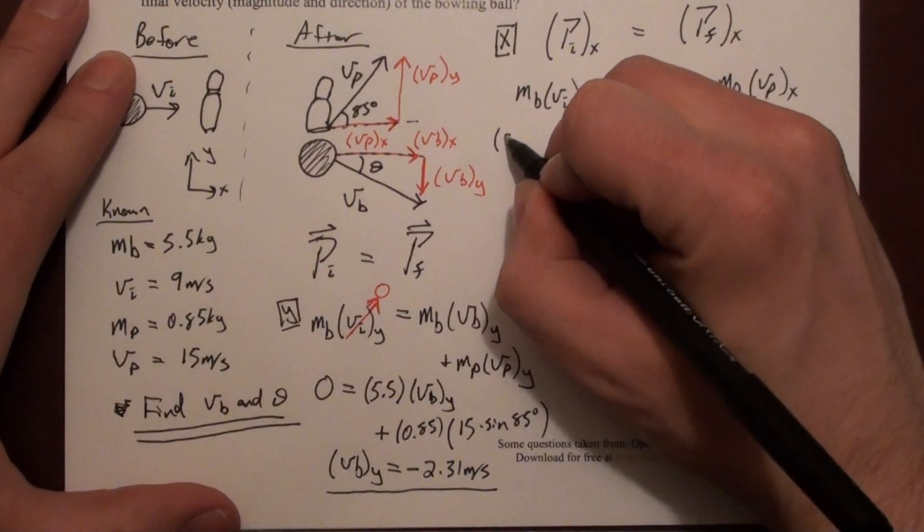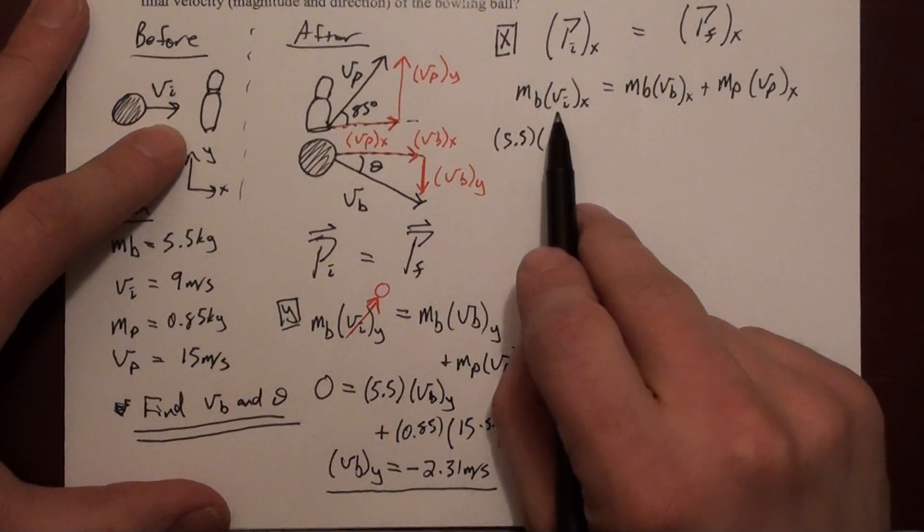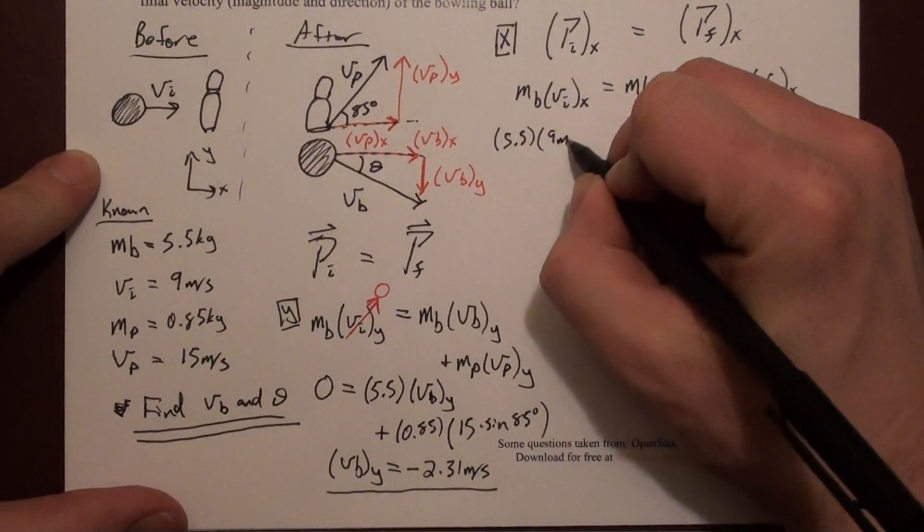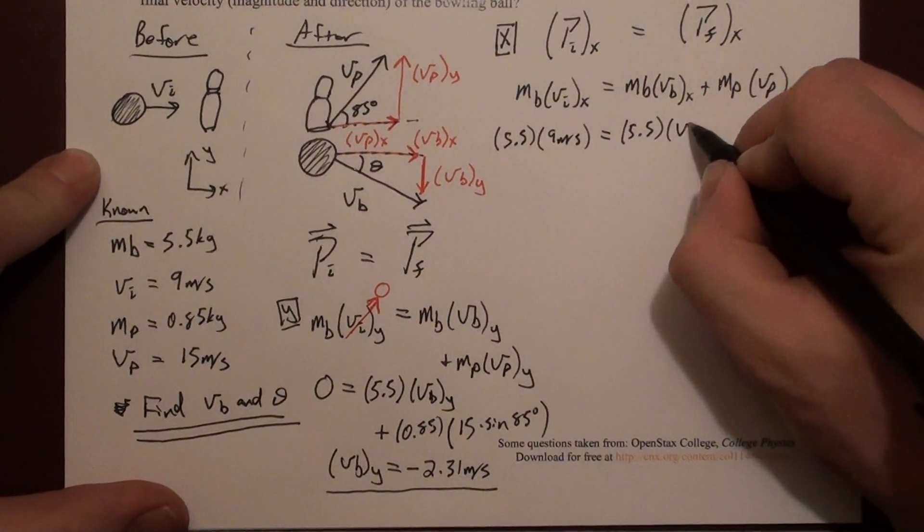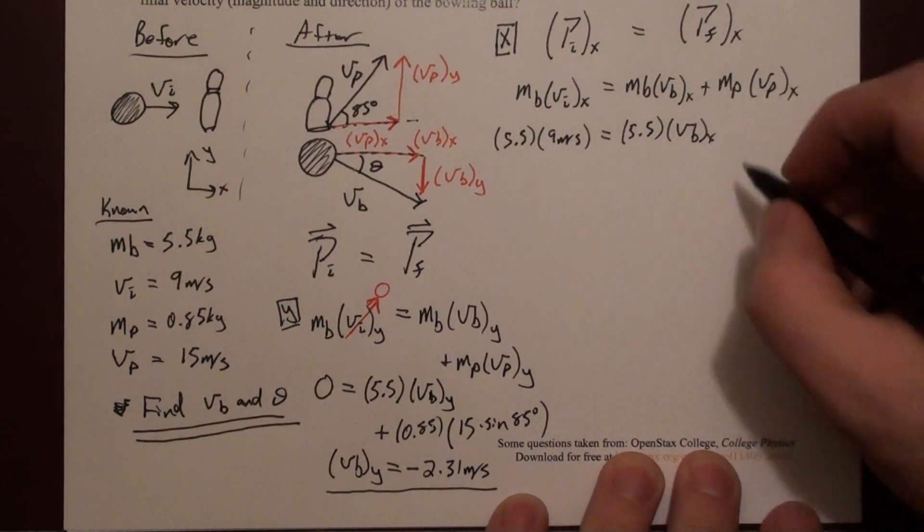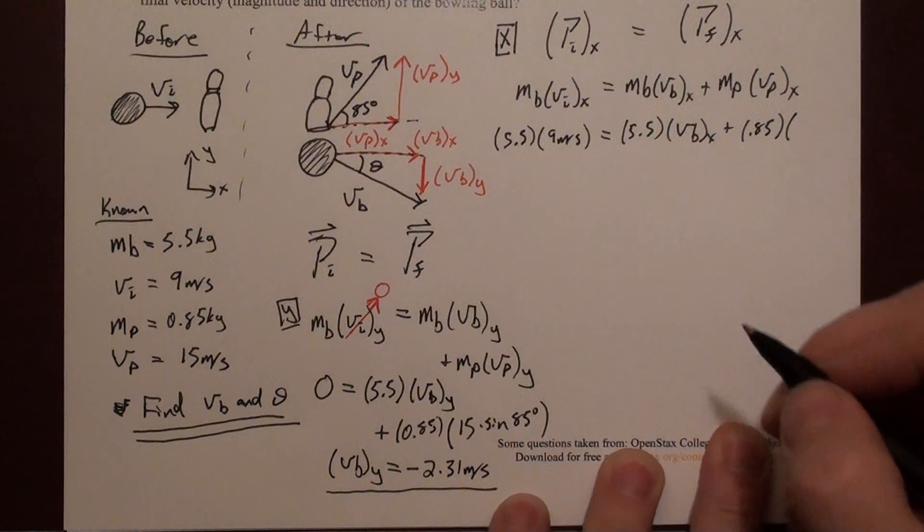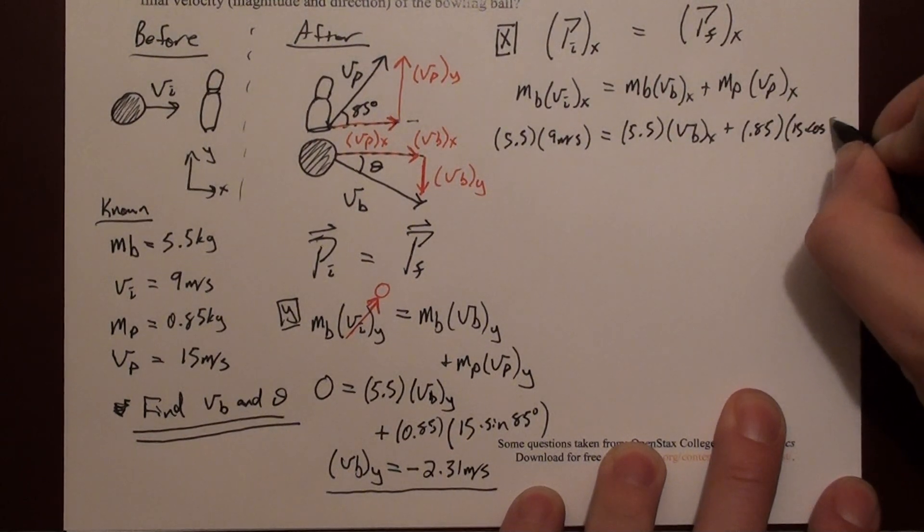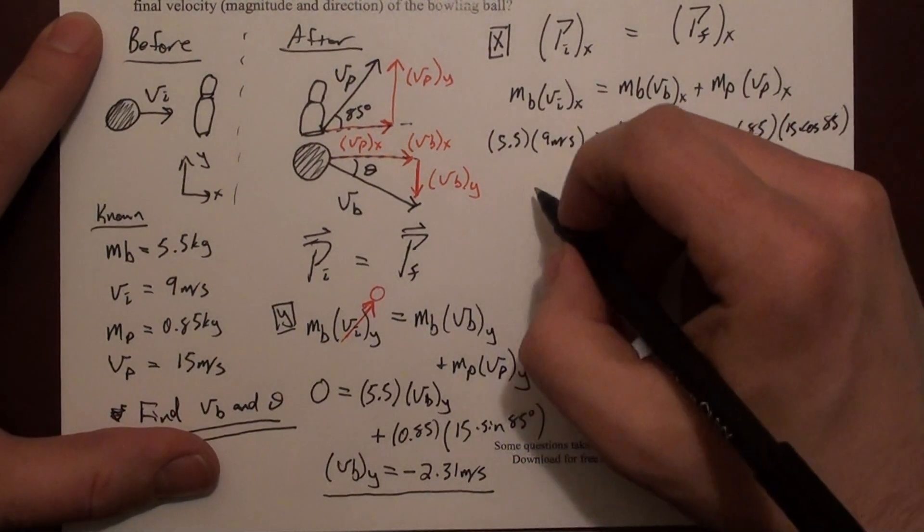Now I can plug some numbers in. That's 5.5 kilograms times v i x. Well, v i is all in the x direction, so that's simply 9 meters per second. On the right hand side, I have 5.5 kilograms times vb x plus 0.85 kilograms times 15 meters per second times cosine of 85.